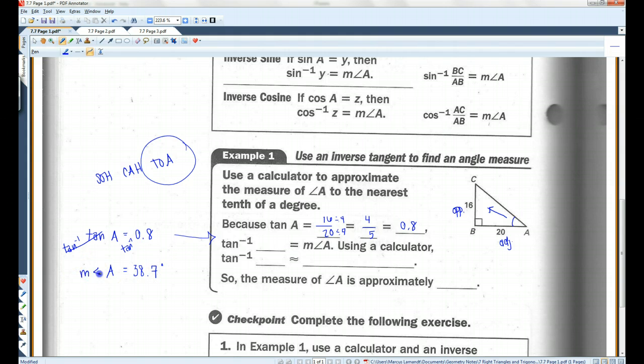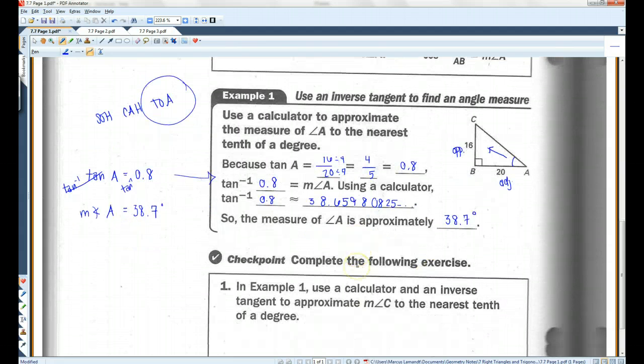And you could actually write this the measure of angle A. That's the proper way to write it. It's kind of confusing the way they write it out, so I wanted to write it out this way. Inverse tangent of 0.8 equals the measure of angle A. Using a calculator, inverse tangent of 0.8 is 38.65980825, etc. So the measure of angle A is approximately 38.7 degrees.